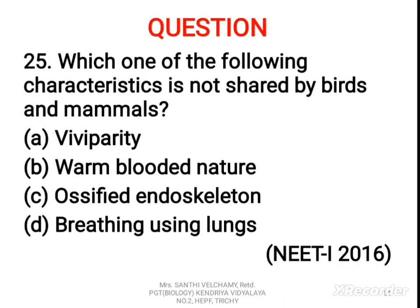25th question: which one of the following characteristics is not shared by birds and mammals? A) Viviparity, B) Warm-blooded nature, C) Ossified endoskeleton, D) Breathing using lungs. The correct answer is A, viviparity. All birds are oviparous while all mammals except Ornithorhynchus — the duck-billed platypus — and Echidna, the spiny anteater, are viviparous.